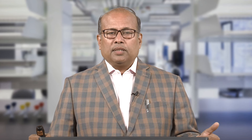There are many methods for efficiency improvement. These include renovation and modernization of old power plants whose efficiency drops over time, reducing energy theft which is particularly an issue in southern Asia, and reducing losses from ageing distribution transformers. Other methods include 100 percent metering accountability, better operation and maintenance practices, adopting high voltage distribution systems (HVDS), and introducing automation.